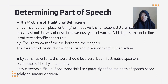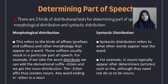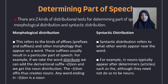It does seem difficult, if not impossible, to rigorously define the parts of speech based solely on semantic criteria. There are two kinds of distributional tests for determining parts of speech: morphological distribution and syntactic distribution. Morphological distribution refers to the kinds of affixes — suffixes or prefixes — and other morphology that appear in a word. These suffixes usually result in a particular part of speech. For example, if we take the word 'distribute,' we can add the derivational suffix '-tion' and we get the noun 'distribution.' The '-tion' affix thus creates nouns — any word ending in '-tion' is a noun.